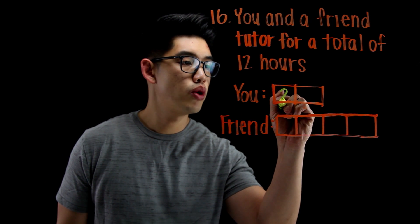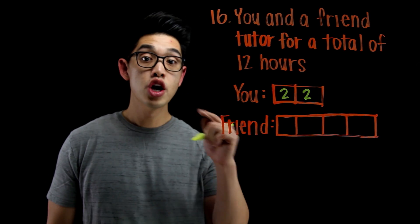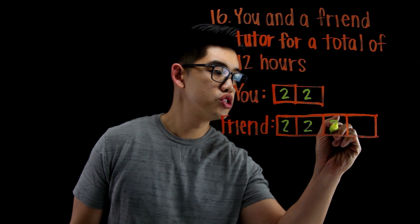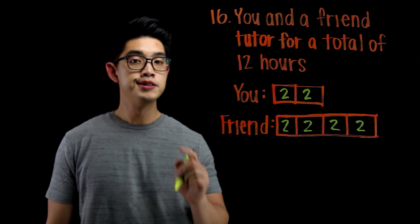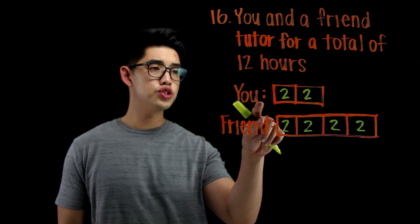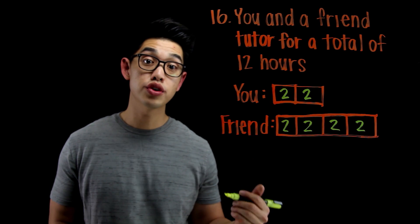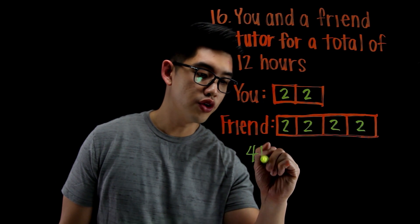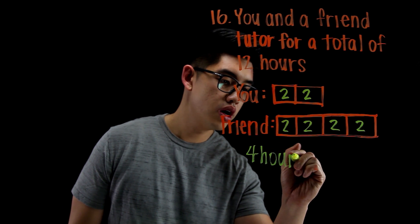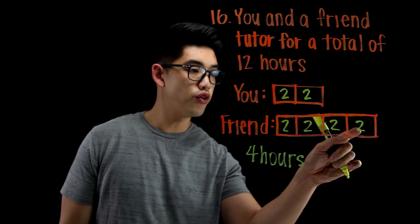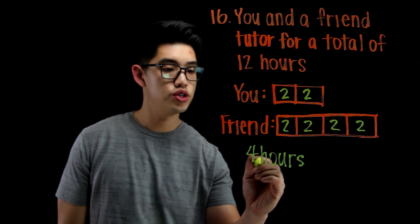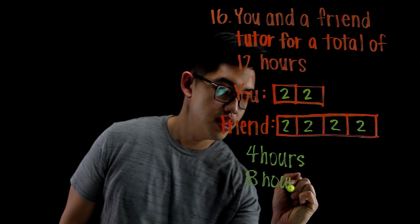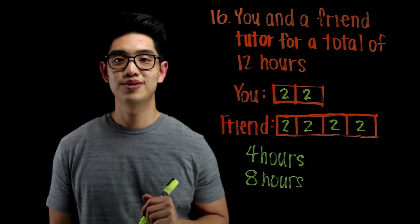So you tutor 2 hours here, 2 hours here. Your friend tutors for 2 hours here, 2 hours here, 2 hours here, 2 hours here. If you tutor for 2 and 2, that means you tutored for 4 hours. While your friend tutored for — 4 times 2 — your friend tutored for 8 hours. And that is your answer.